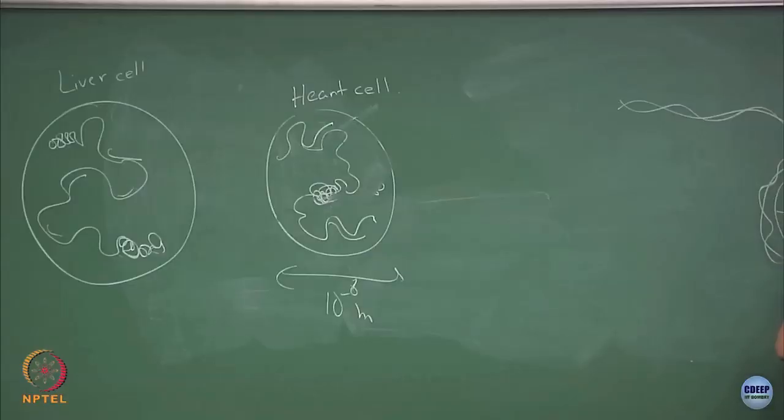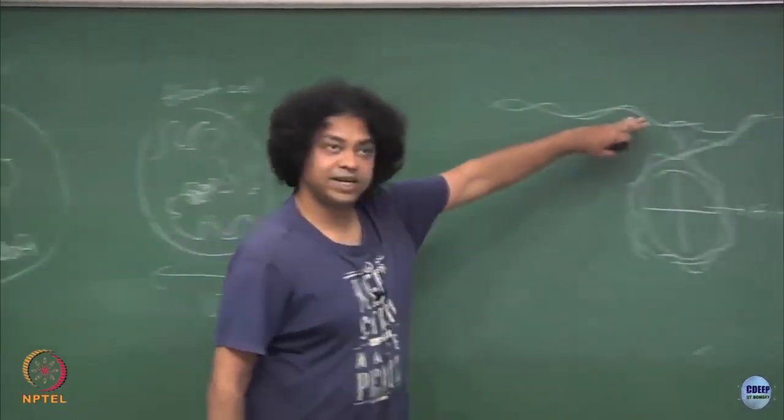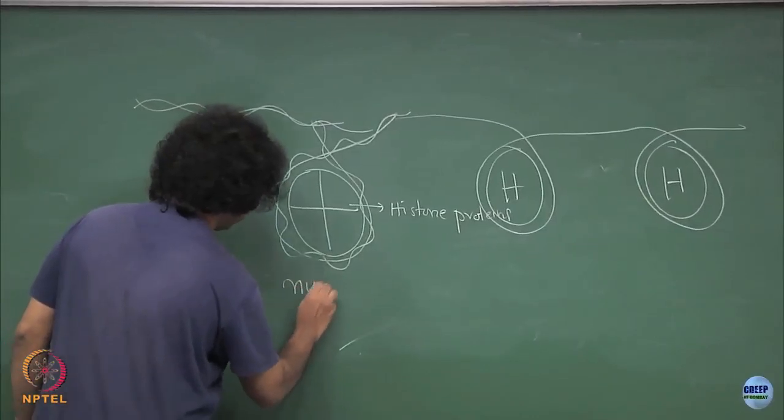Here is my DNA double helix. This double helix wraps itself around a protein complex called a histone complex or histone octamer. This contains eight histone proteins, and the DNA comes and wraps itself around this histone protein to form a beads-on-a-string structure. If you zoom out and look at the DNA, you will see it is wrapped around these histone octamer proteins. This complex as a whole — the DNA plus the histone — is called a nucleosome.